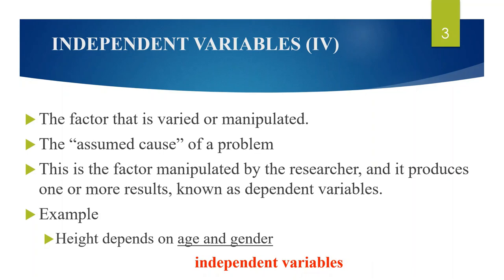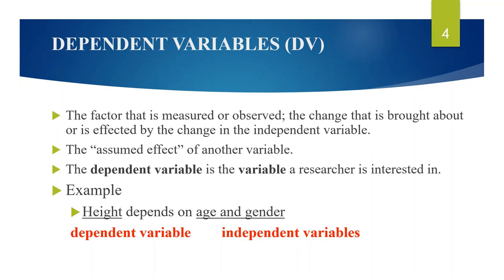Let us have one more example. If a scientist conducts an experiment to test the theory that a vitamin could extend a person's life expectancy, then the dependent variable here will be the lifespan and the independent variable will be the amount of vitamin given to the subject. The dependent variable is the factor that is measured or observed — the change that is brought about or is affected by the change in the independent variable. It is the assumed effect of another variable in the study.